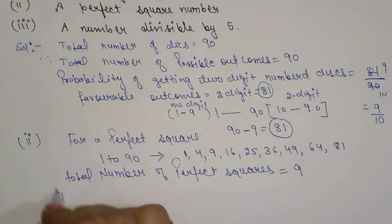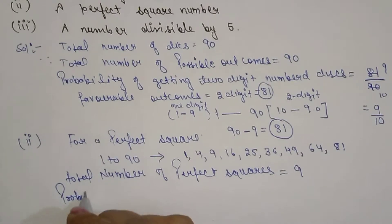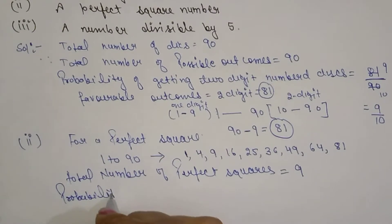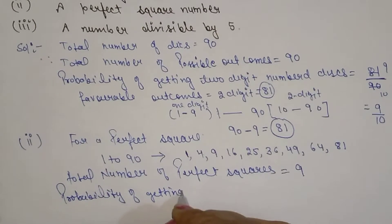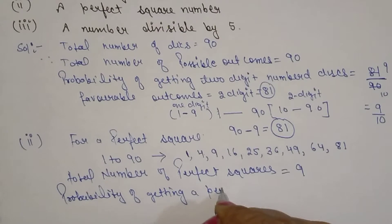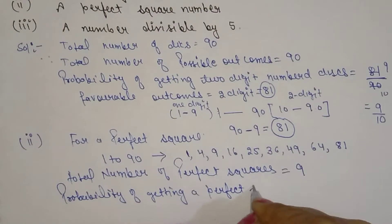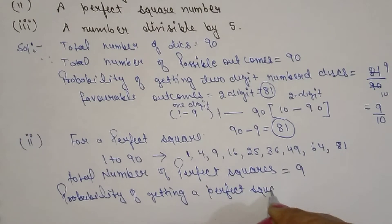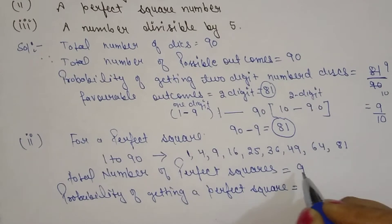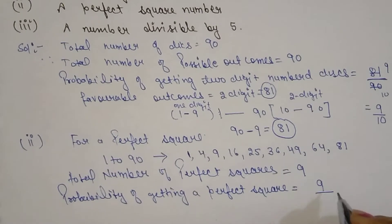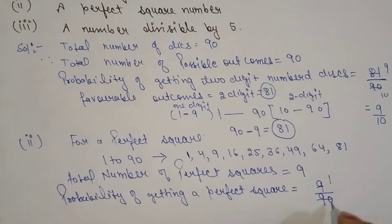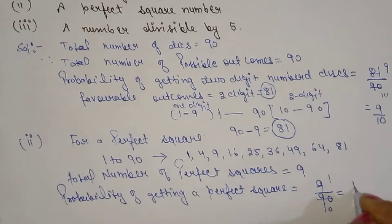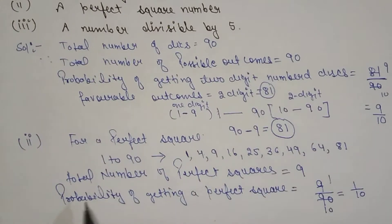So here we write: probability of getting a perfect square = number of favorable outcomes divided by total number of outcomes = 9 out of 90. That means 9/90, which simplifies to 1/10. So the probability of getting a perfect square is 1/10.